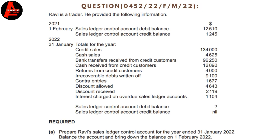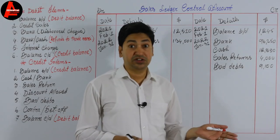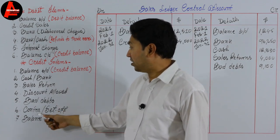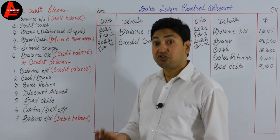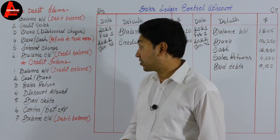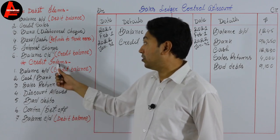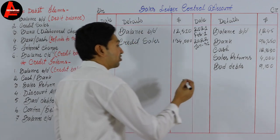Contra entries of $1,677: as I already explained, contra entries are recorded on the debit side of the purchase ledger control account and on the credit side of the sales ledger control account. So this is a credit item. Sometimes it may be written as 'set off' — either way, record it on the credit side. We write contra entry: $1,677.